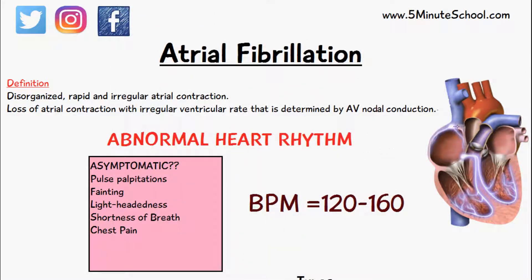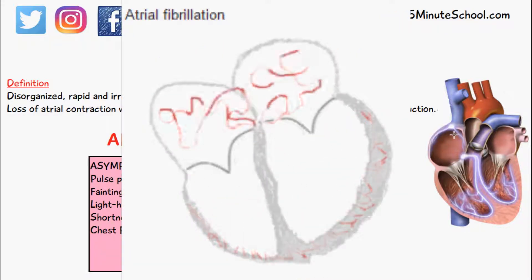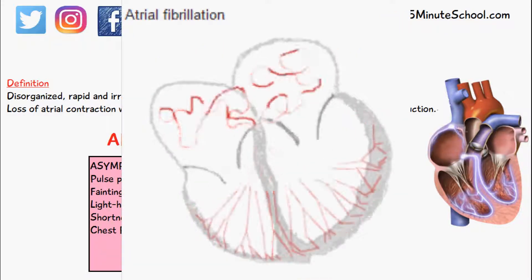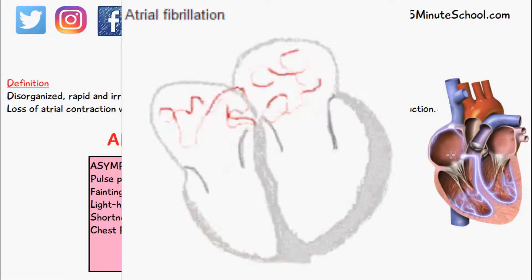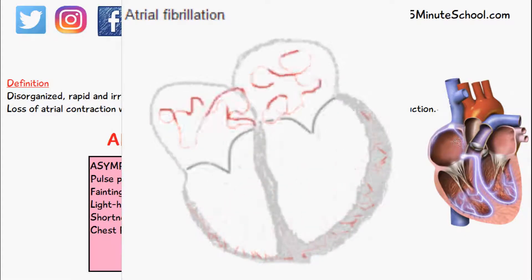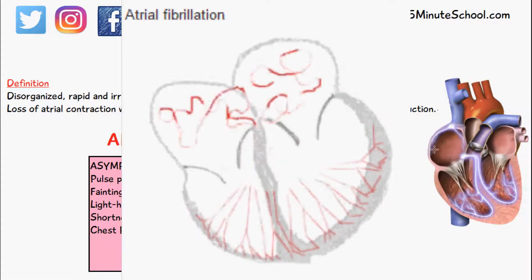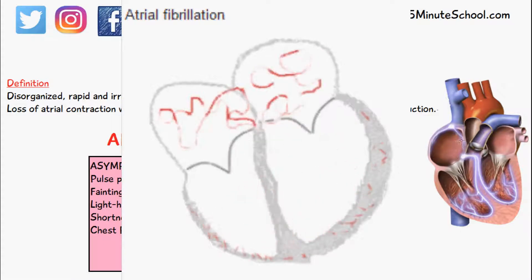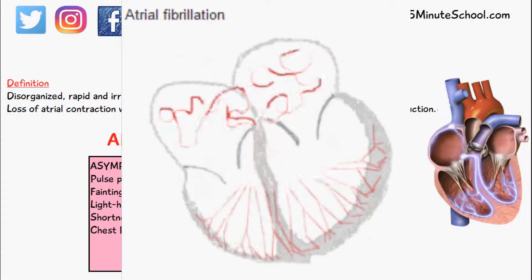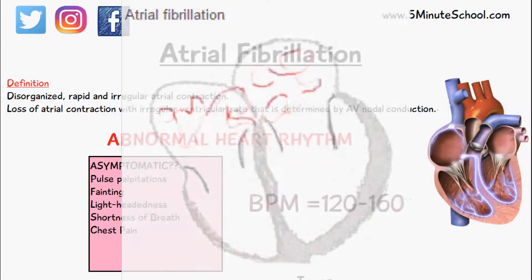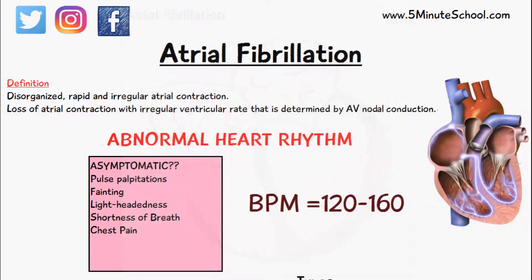In cases of atrial fibrillation, this electrical impulse is very sporadic, disorganized, and rapid — stronger in some areas and weaker in others. The overall effect is a very irregular and disorganized atrial contraction. That is the summary of atrial fibrillation.